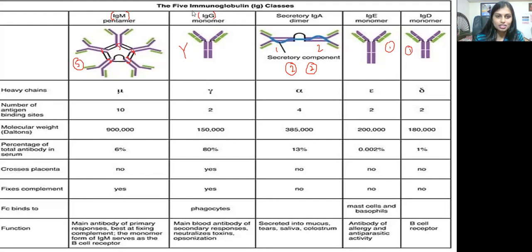Looking more at the structure: IgM is pentameric, linked with some chains. IgG is monomeric. IgA is dimeric. IgE and also IgD are both monomers.